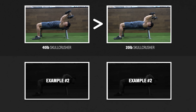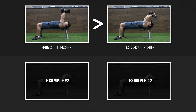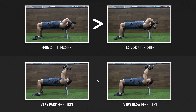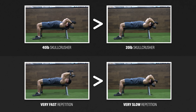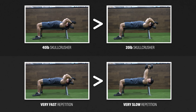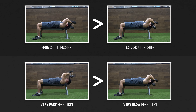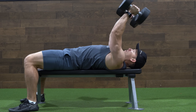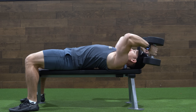For example, I would expect a 40-pound dumbbell skull crusher to cause more issues than a 20-pound dumbbell skull crusher because it's a greater load. Similarly, a very fast repetition would likely be more problematic than a very slow repetition because tendons are also affected by the rate or speed of loading. Range of motion can play a factor as well.